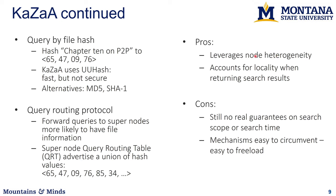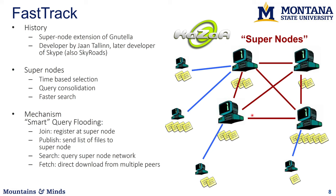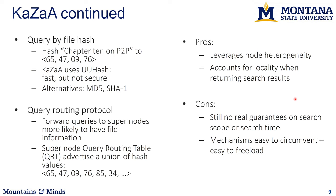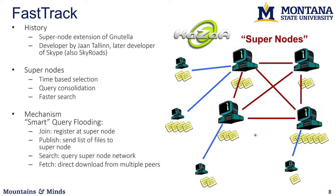The nice thing about Kazaa is that it started to leverage node heterogeneity — stable nodes got more responsibility in the system. Super nodes also accounted for locality when returning search results, giving you nearby nodes to download from. This sped up the search, but there were still no guarantees on consistency or search scope. The only advantage versus Gnutella was that super nodes were more likely to be stable nodes that stuck around. There was also a lot of freeloading — people would download without sharing resources — so it really wasn't self-scaling, which was one of the goals of peer-to-peer.